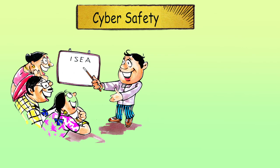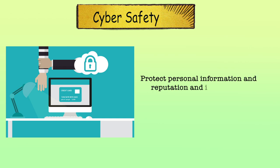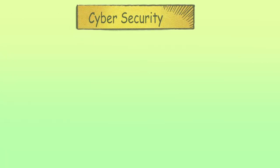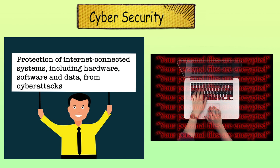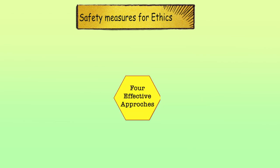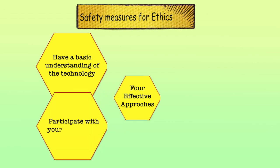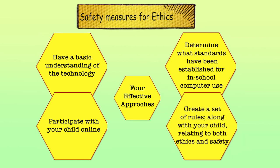Cyber safety addresses the ability to act in a safe and responsible manner on the internet and other connected environments. These behaviors protect personal information and reputation through safe practices that minimize danger from behavioral-based rather than hardware or software-based problems. Cyber security covers physical protection of personal information and technology resources from unauthorized access gained via technology. There are four effective approaches to ensure one is doing the right thing online: have a basic understanding of the technology; participate with your child online; determine what standards have been established for school computer use; and create a set of rules with your child relating to both ethics and safety.